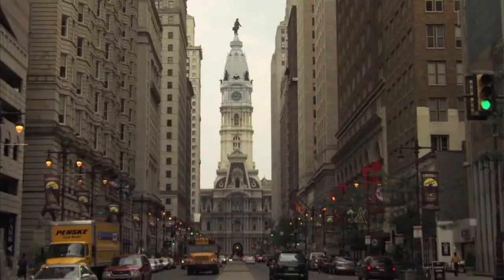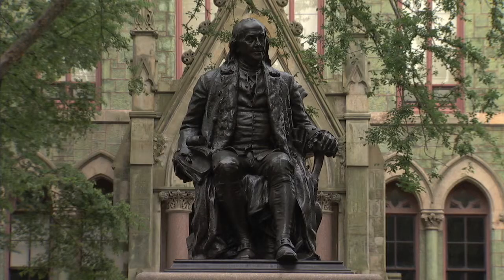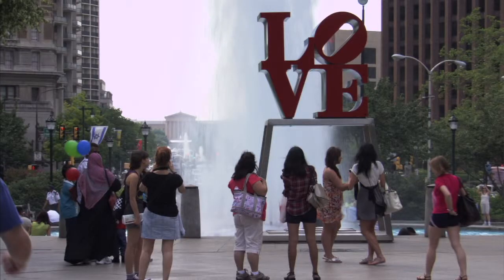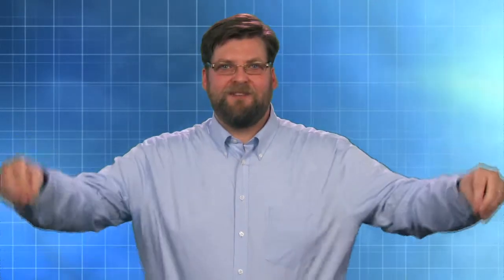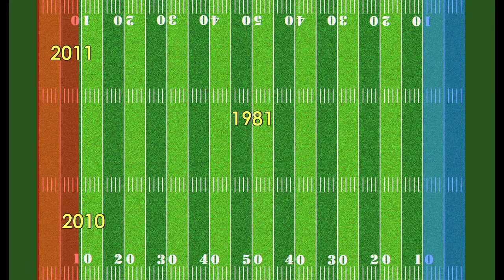So if you think about any one of those components, let's use temperature. Let's say we're thinking about Philadelphia. We take Philadelphia's temperature record for a given month, say July in Philadelphia, and we sort and line them up from the coolest July they've experienced to the warmest July they've experienced. And let's say we put that on a football field from goal line to goal line.